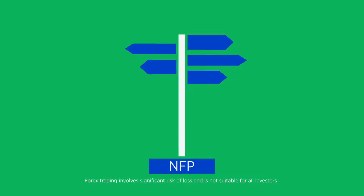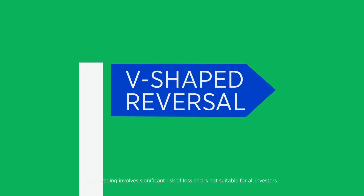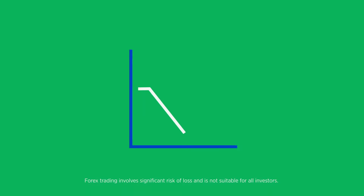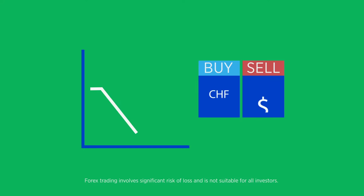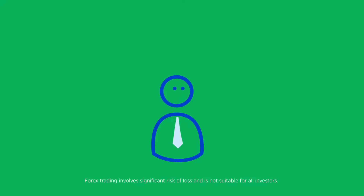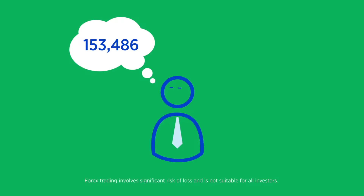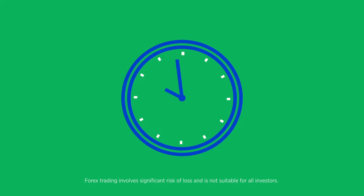There are many strategies to trade around the NFP, but a particularly popular one relies on the famous V-shaped reversal that follows in the wake of the release. This is where the market will spike suddenly in one direction as traders buy or sell safe-haven currencies, before reversing in the following 10 to 120 minutes in the other direction. Rather than trying to get in early and predict both the NFP number and the market's reaction, many traders will wait until initial volatility dies down and try to catch the V-shaped reversal.